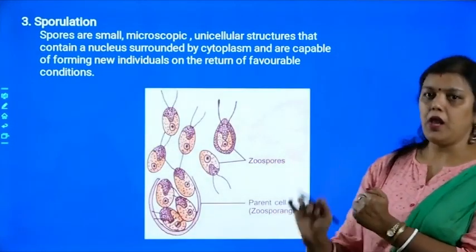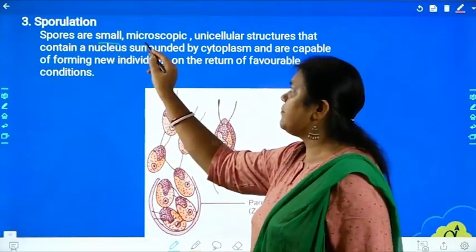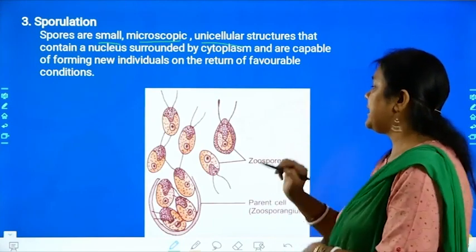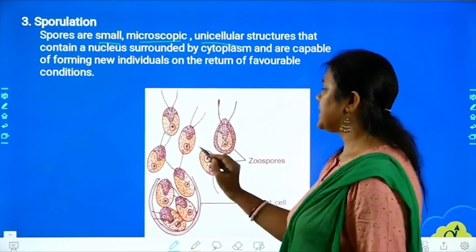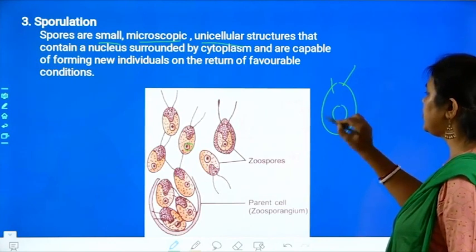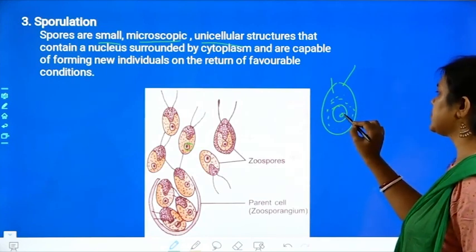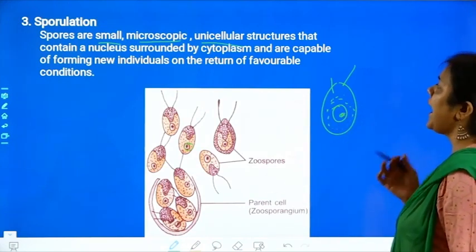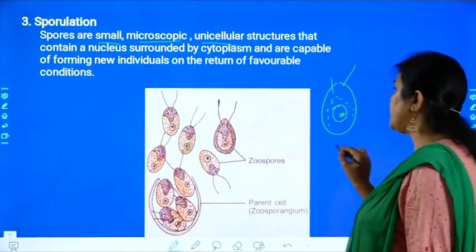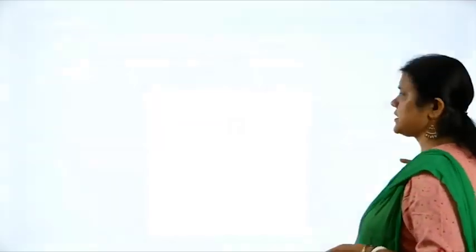Spores are small, microscopic, and unicellular — they are very small, we cannot see them with the naked eye, and they have only a single cell. They contain a prominent nucleus surrounded by cytoplasm. During favorable conditions, the spore will germinate and form a new organism. That process is called sporulation. There are two types of sporulation, most commonly seen in algae and fungi. The two types of spores are zoo spores and conidia.